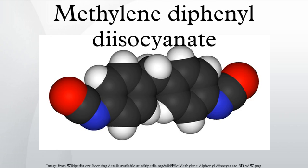Regarding the reactivity of the isocyanate group, the positions of the isocyanate groups influence their reactivity. In 4,4-MDI, the two isocyanate groups are equivalent, but in 2,4-MDI the two groups display highly differing reactivities. The group at the 4-position is approximately 4 times more reactive than the group at the 2-position due to steric hindrance.